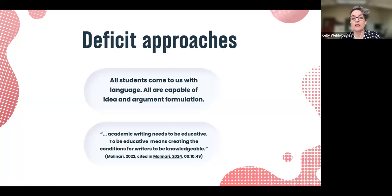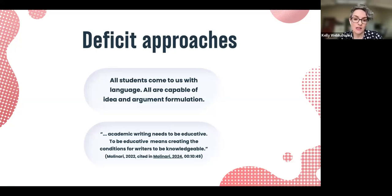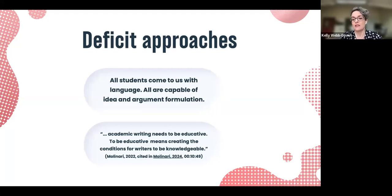We have a deficit approach issue with our students. They don't come to us as blank slates — they have language. I hear the calculator analogy with generative AI: you still have to learn the basics. But our students don't come without language; they can still create ideas in their own languages. Julia Molinari says academic writing needs to be educative — creating conditions for writers to be knowledgeable. Are we making it easy for them to develop their ideas, or are we making it harder by requiring academic English?